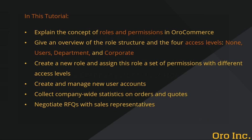In this tutorial we'll explain the concept of roles and permissions in OroCommerce. We'll give you an overview of the role structure and the four access levels: None, User, Department, and Corporate. We'll create a new role and assign it a set of permissions with different access levels. Finally, we'll demonstrate the main processes a buyer with the role of a company administrator can perform based on the default settings.